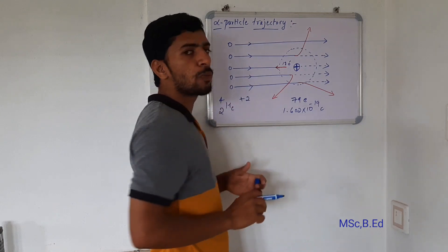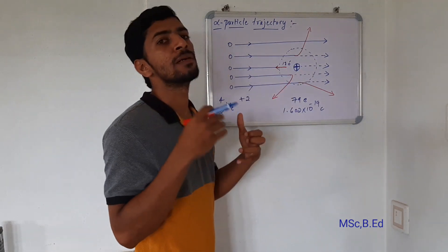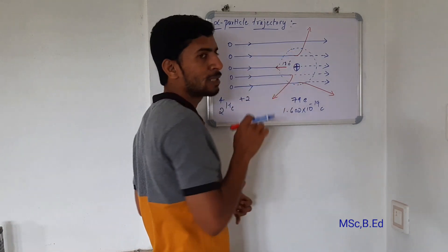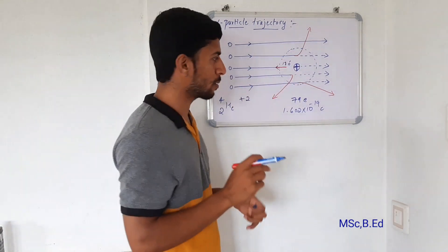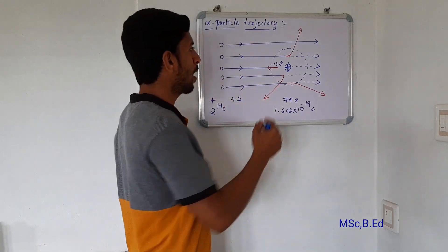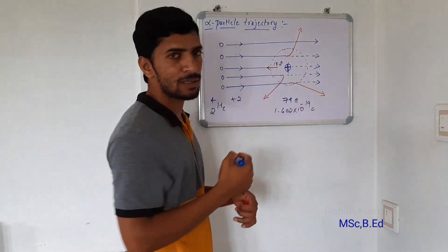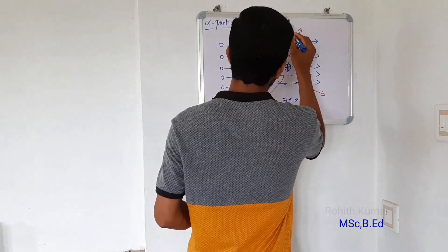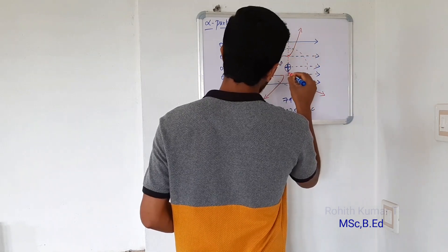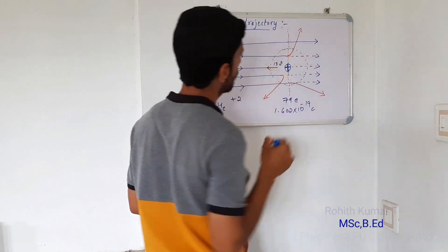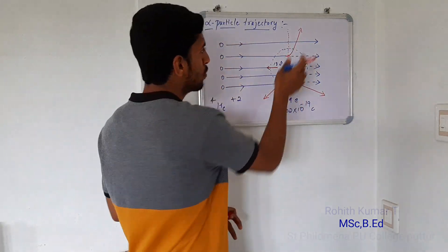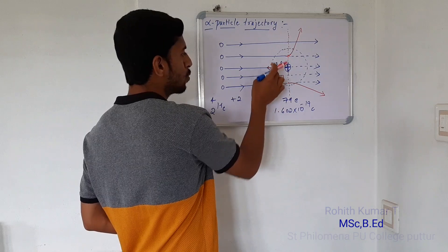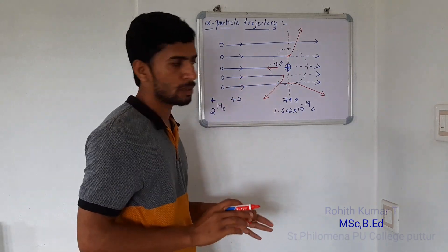If an alpha particle goes in a straight line, the angle of deviation is 0 degrees, meaning no deviation. The backward scattering angle is 180 degrees. Two lines represent deviations less than 90 degrees, since the line at exactly 90 degrees is marked separately. Two other lines represent backward deviations greater than 90 degrees.